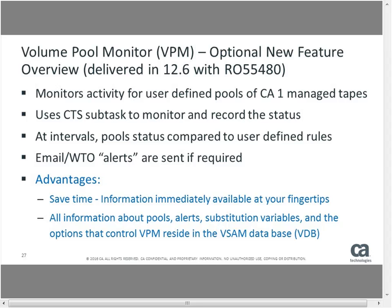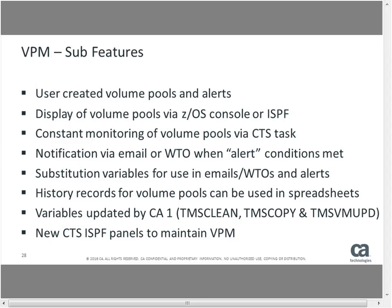You create volume pools and alerts and specify alert thresholds. The system monitors the pools constantly. Notification is via email or WTO. Substitution variables are available for emails so you can include which LPAR or pool is getting low and how low it is. It also keeps some history records. There are also variables from TMS Clean, Copy, and the vaulting system, so you can also look for things from those to trigger the event.